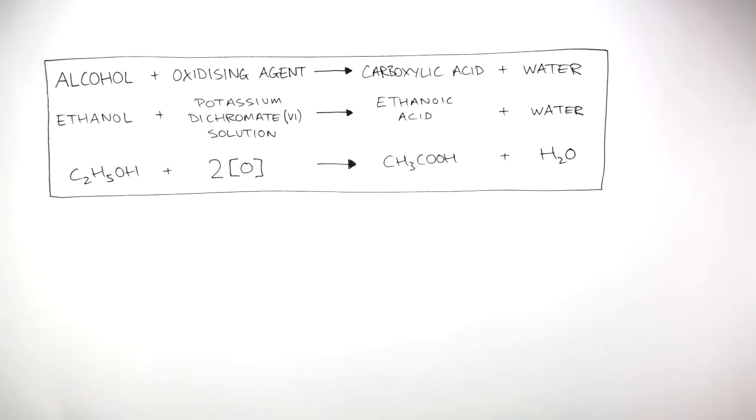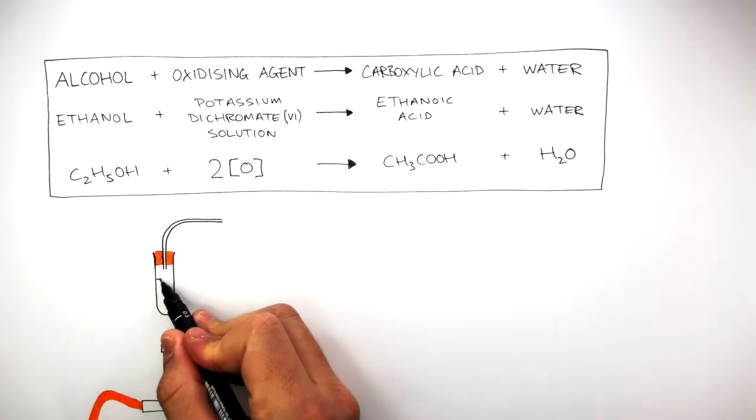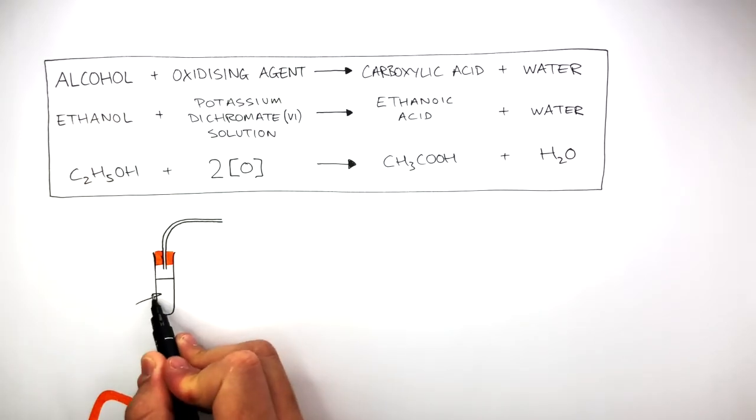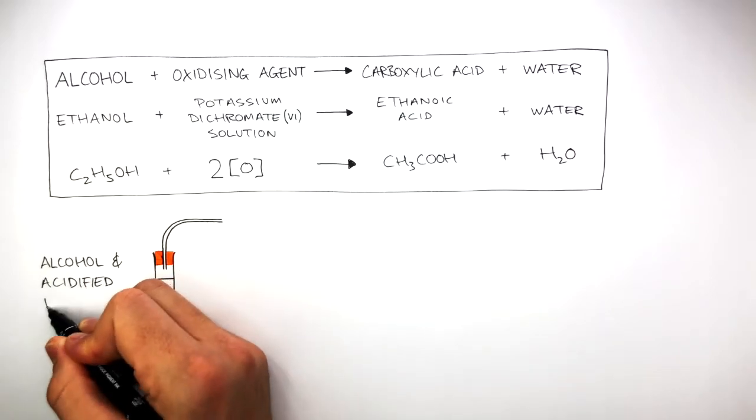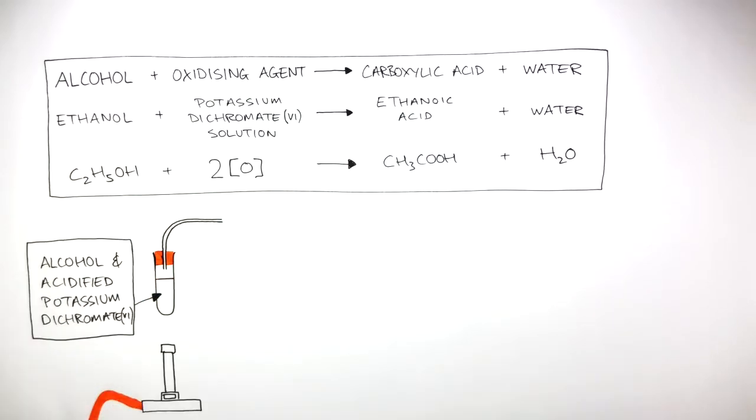To carry out this experiment, we need a Bunsen burner, a test tube and a bung with a delivery tube attached at the top. The reacting mixture goes inside the test tube, which is alcohol and acidified potassium dichromate 6 solution. The Bunsen burner is used to heat the reacting mixture, causing the alcohol and acidified potassium dichromate 6 solution to boil.